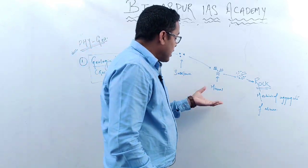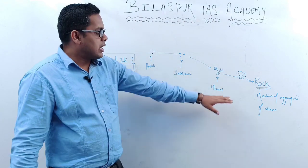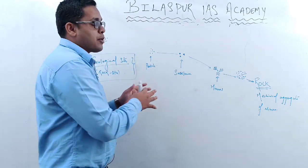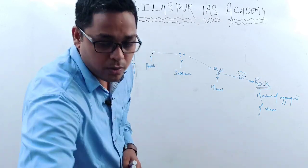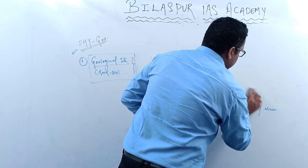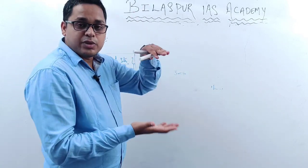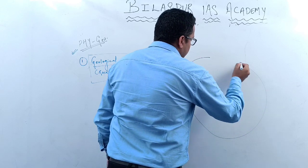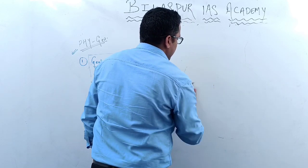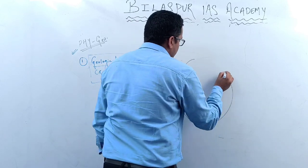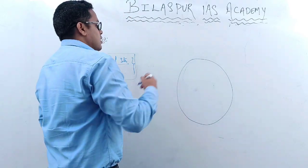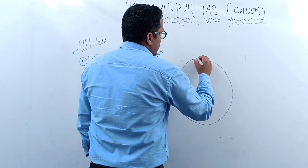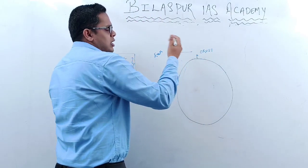To understand where the earth gets its minerals, we need to understand the complete structure of the earth's crust and core. I will demonstrate what our earth crust is made of and talk about the different layers of the earth. The topmost layer is called the crust, or the earth crust.